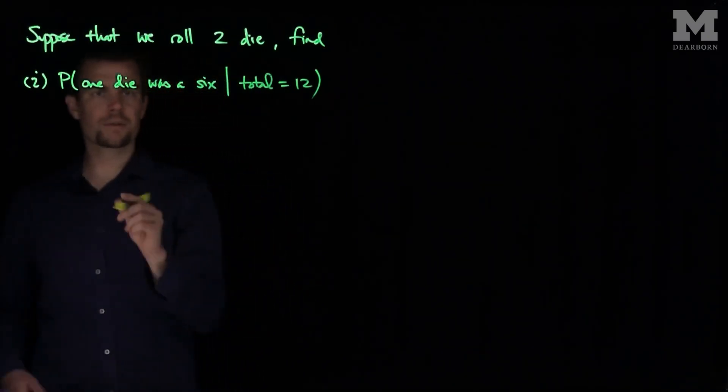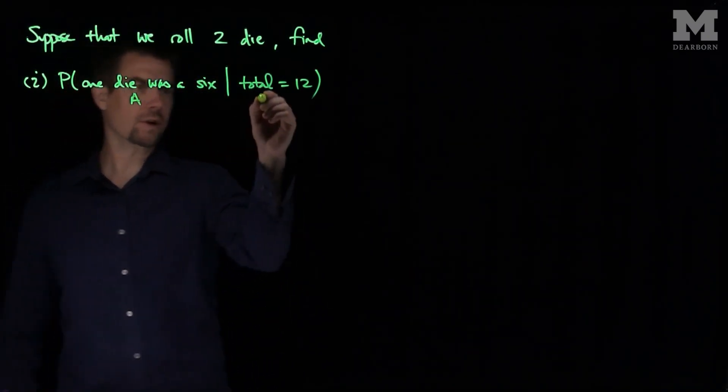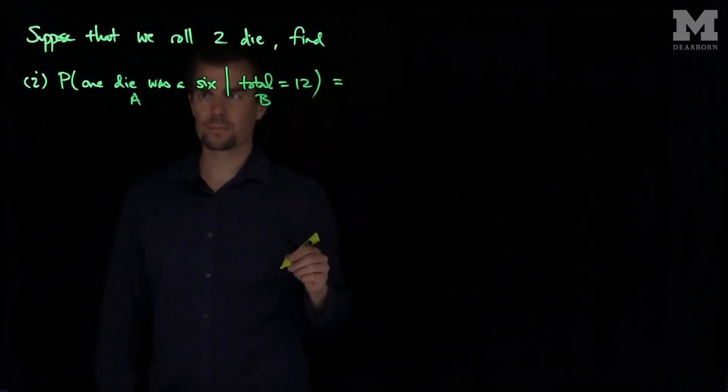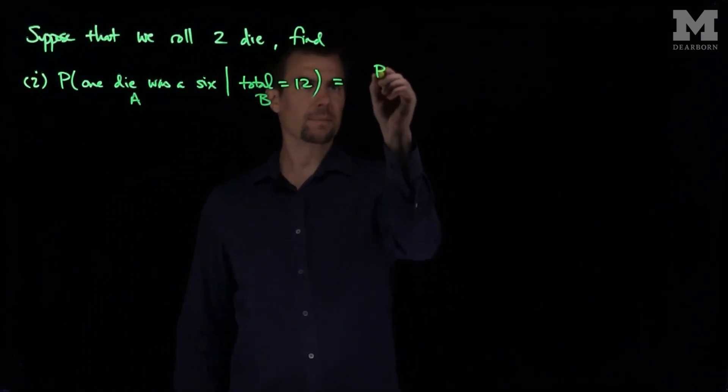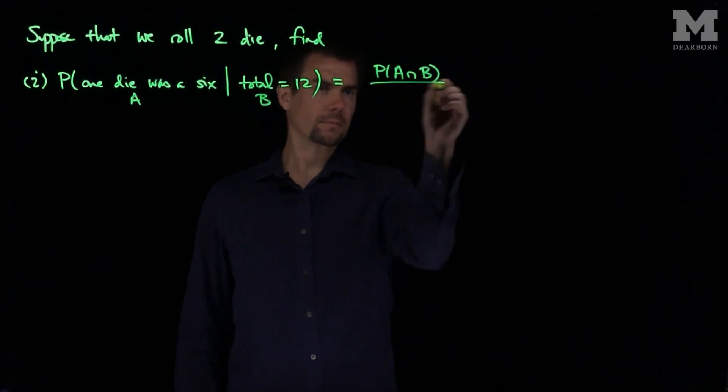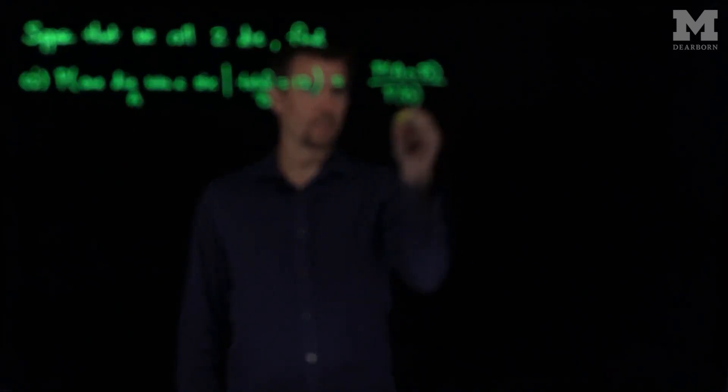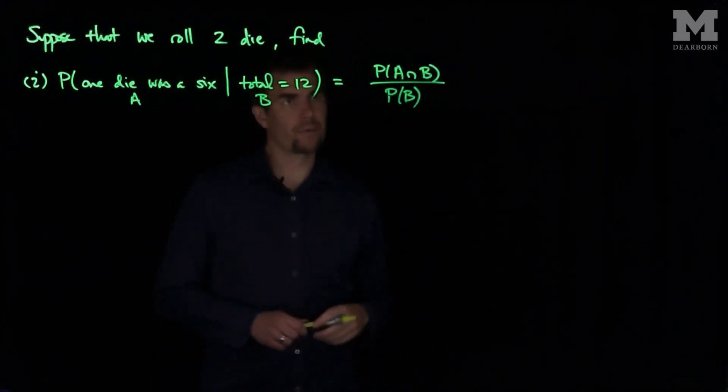So if we call this event over here A and this event over here B, the definition of conditional probability is the probability of A intersect B over the probability of B.